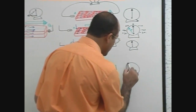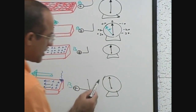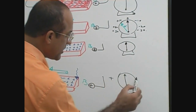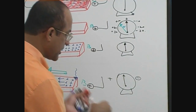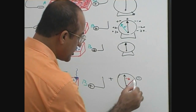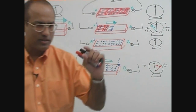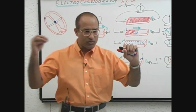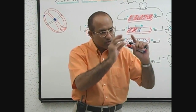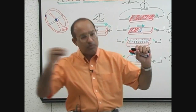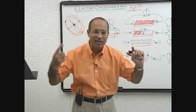Deflection in the needle should be negative. This is neutral. This position is positive side and this position is negative side. This is positive electrode. If positive charges are moving towards the positive electrode, deflection is positive. If positive charges are moving away from the positive electrode, deflection is negative.